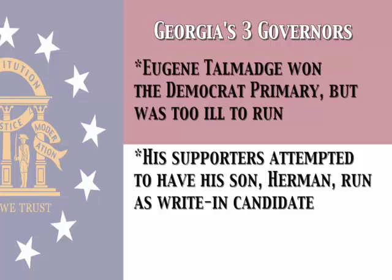Eugene Talmadge grew ill and his supporters were fearful that he may not make it to the general election, as his health was so bad. So they began to do some research and found a precedent that stated that if the governor-elect was unable to take office, the general assembly could choose from the top three write-in candidates. So Eugene Talmadge's supporters began a write-in campaign for Eugene's son, Herman Talmadge, and the general assembly selected Herman Talmadge as the rightful governor of Georgia.